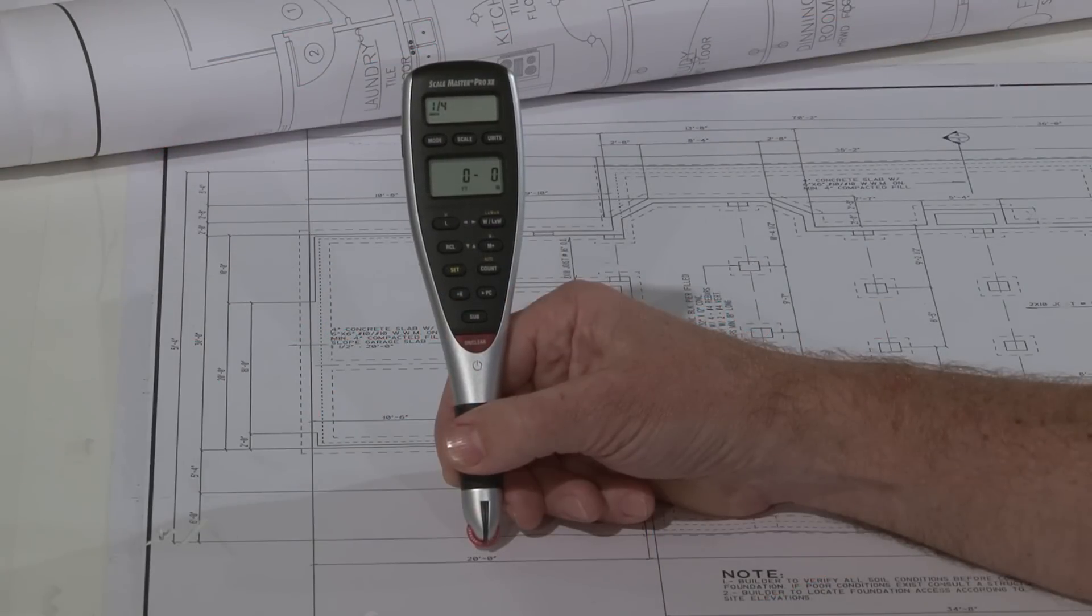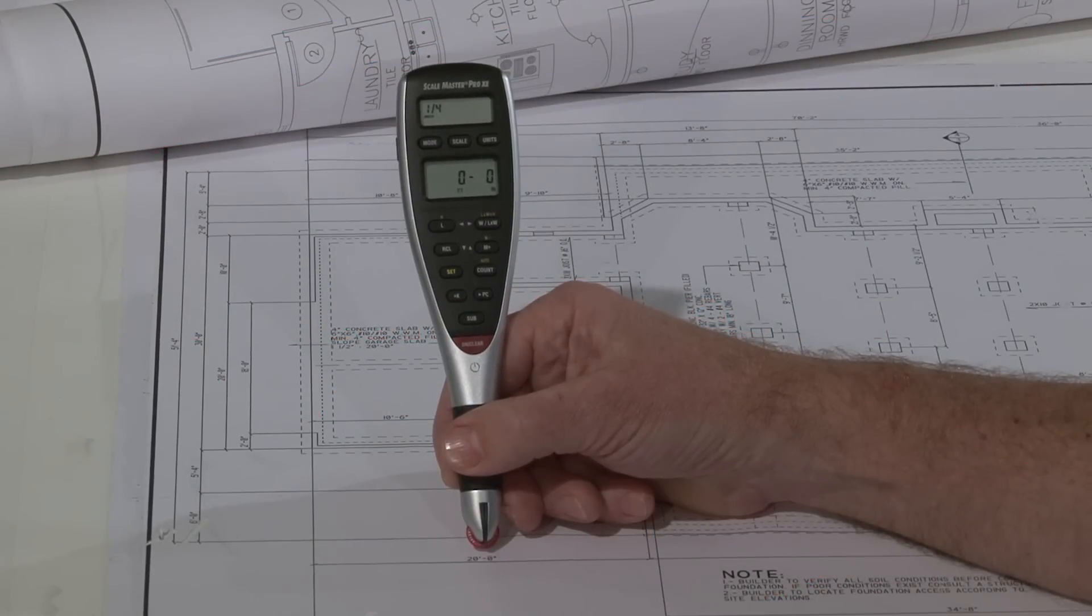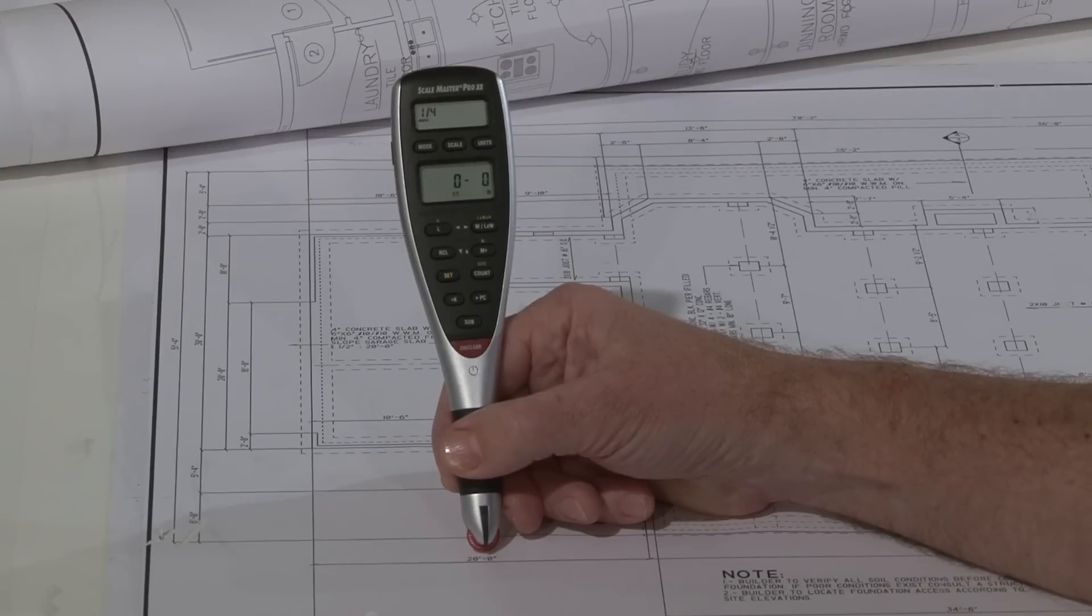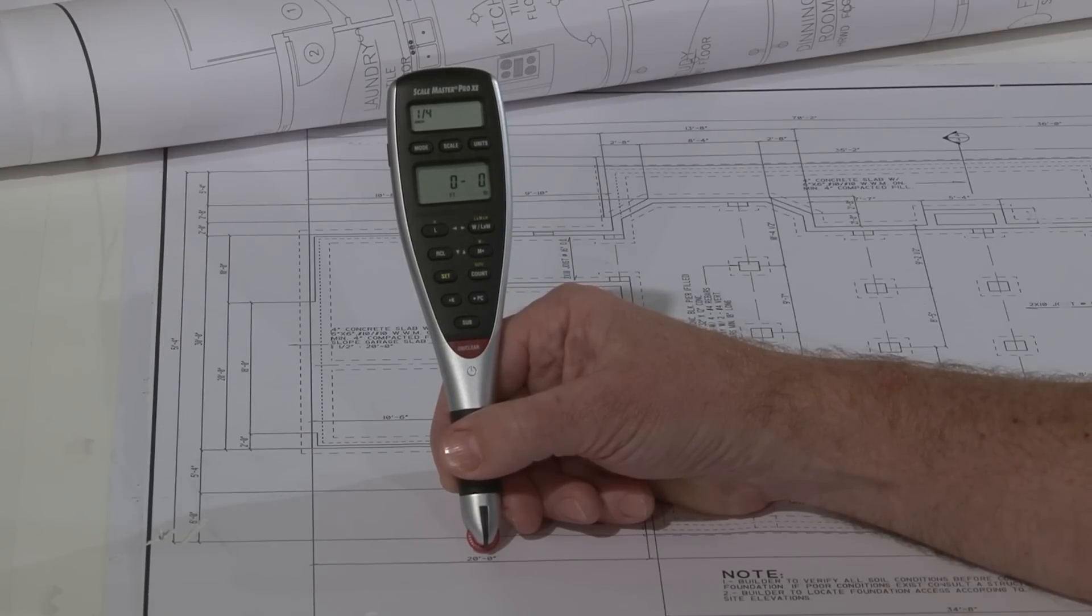Now let me show you how to set the custom scale for out-of-scale plans. The ScaleMaster Pro XE has ten custom scale registers: five for US or imperial scales and five for metric scales.